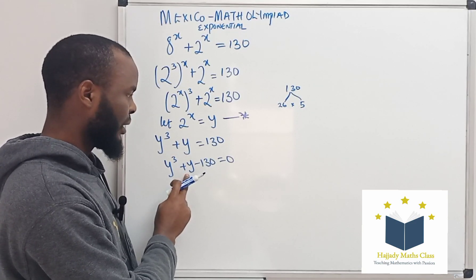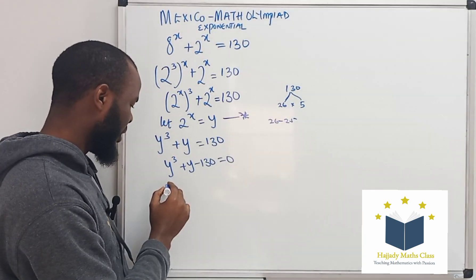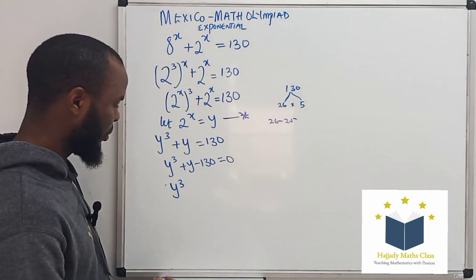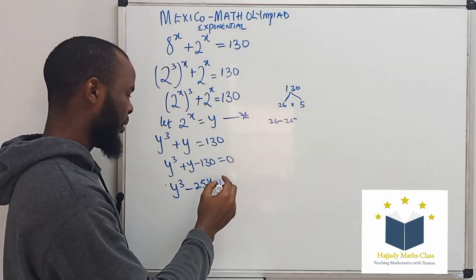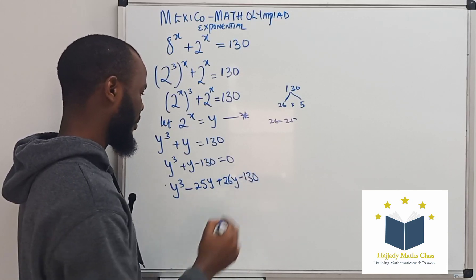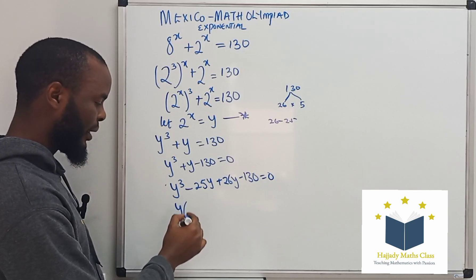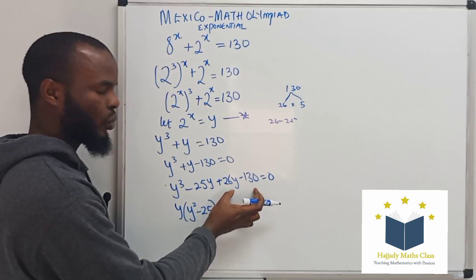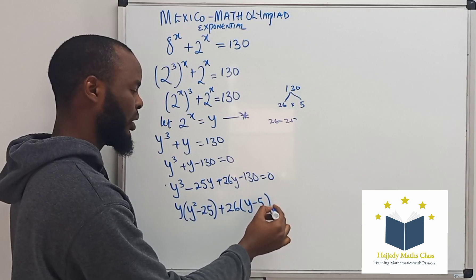So my y can be written as 26 minus 25. Using the same knowledge here to solve this quadratic equation. So here, I'm going to have y cubed minus 25y, plus 26y minus 130. Now, using this, I can factor out y here and I'm going to be left with y squared minus 25, plus 26 is common. So factoring out 26, I'm going to have y minus 5 equals 0.